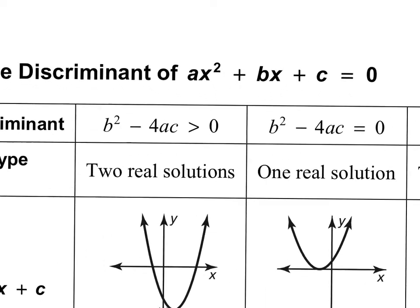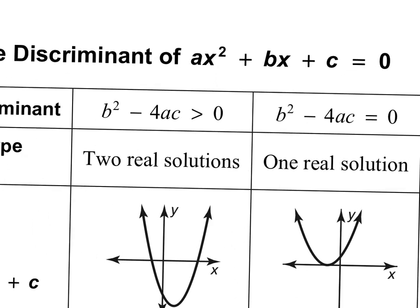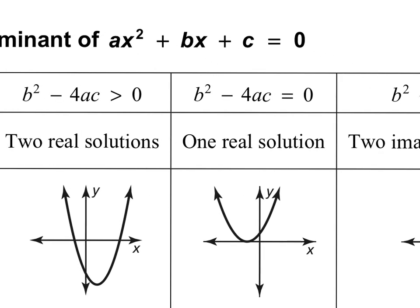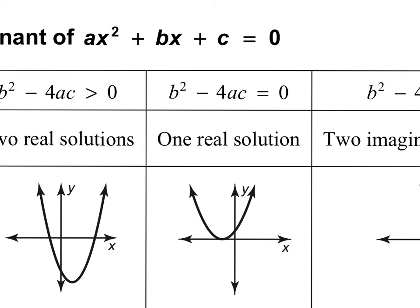There are three situations you can have. You can have a situation where whatever you get inside the radical is positive — greater than zero. So whatever you get from b squared minus 4ac is positive. If you get a positive number, you know that you're going to get two real solutions. If you get what's inside the radical equal to zero, and you compute b squared minus 4ac and get zero, that means there is only one solution.